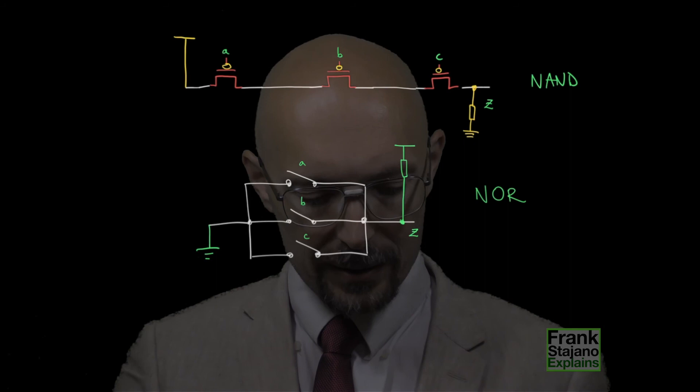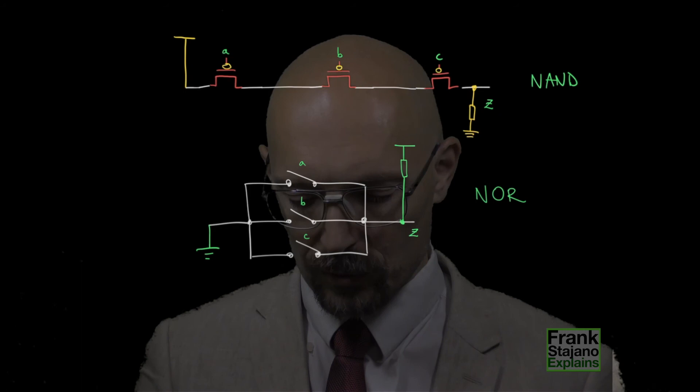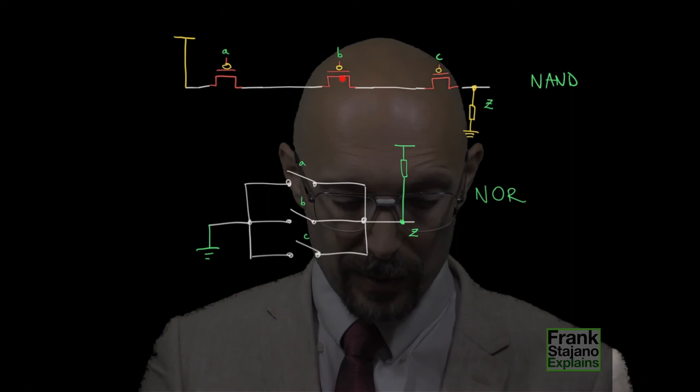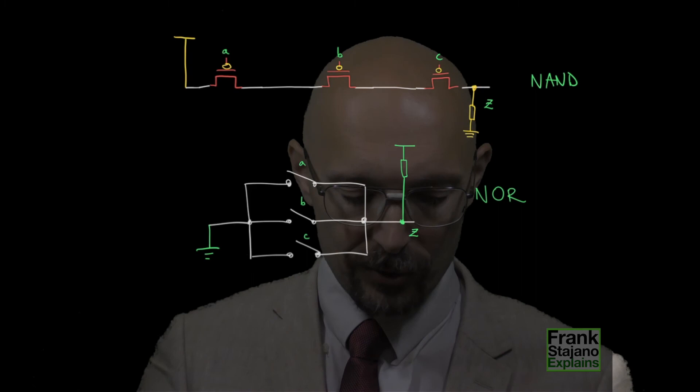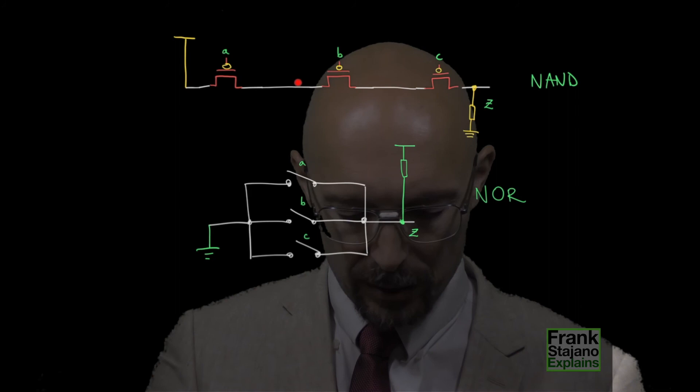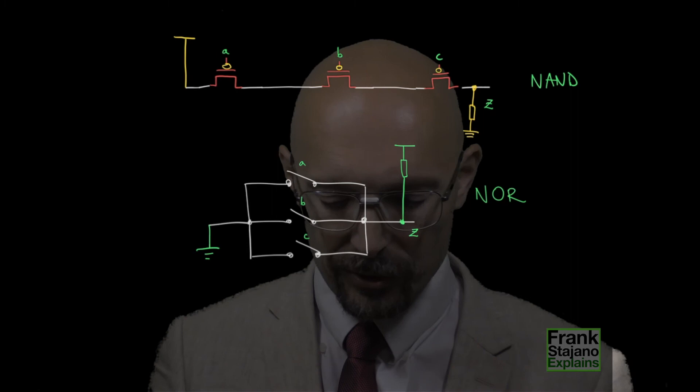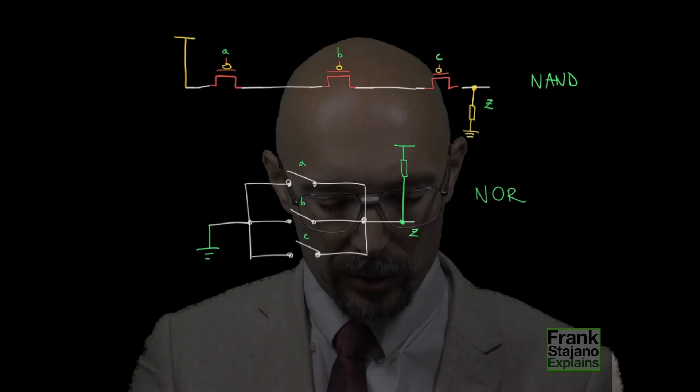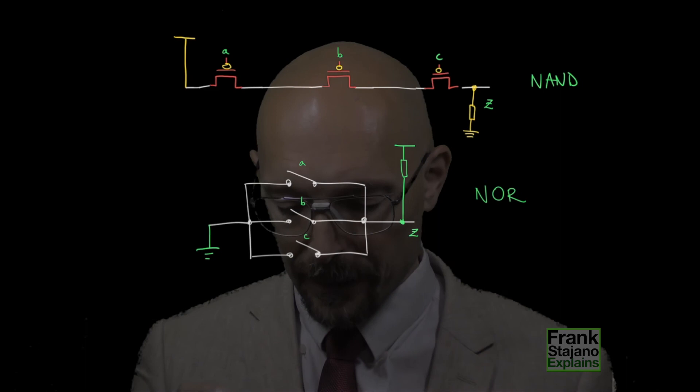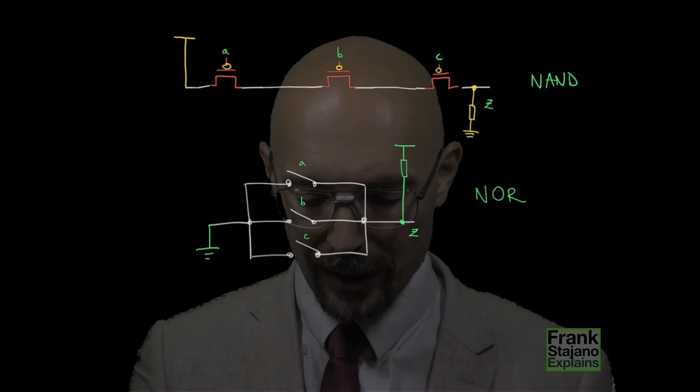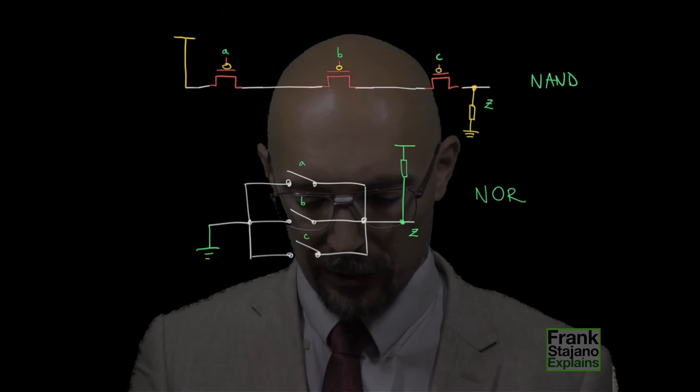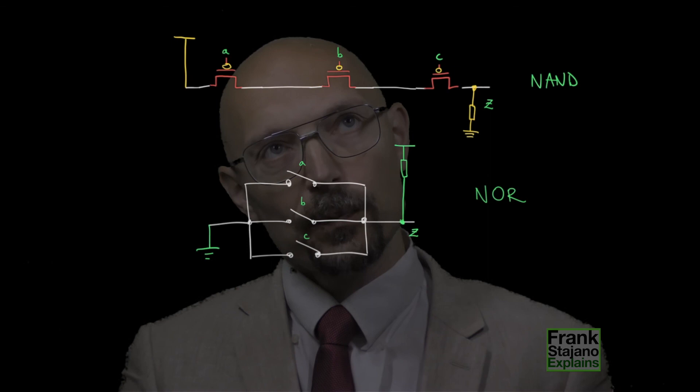If I have this series of P-MOS transistors, then the series will always be disconnected, and therefore the output will be pulled down to logic 0, except in the only case where all the P-MOSs are conducting, which happens when all the inputs are at 0. So 0, 0, 0 everywhere gives me a conducting series and therefore a connection to logic 1. 0, 0, 0 gives me 1. Any other combination with 1s anywhere on the inputs will end up disconnecting this series somewhere, and so this floating output will be pulled down to ground to logic 0. So all zeros on the input is logic 1, anything else is logic 0.